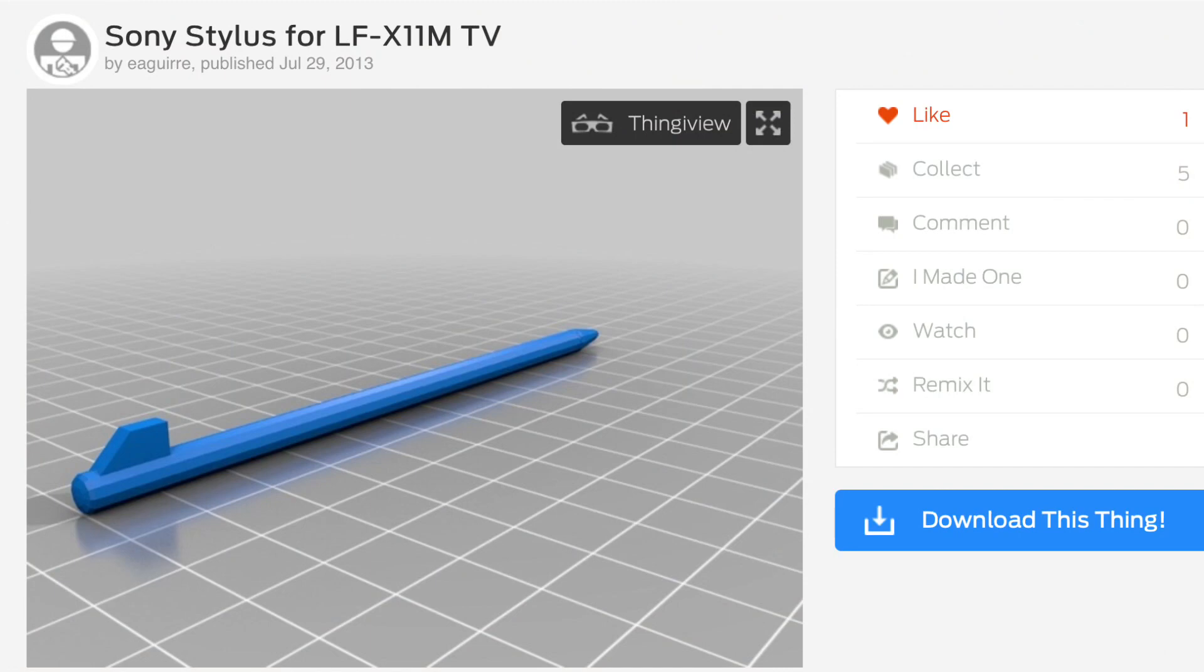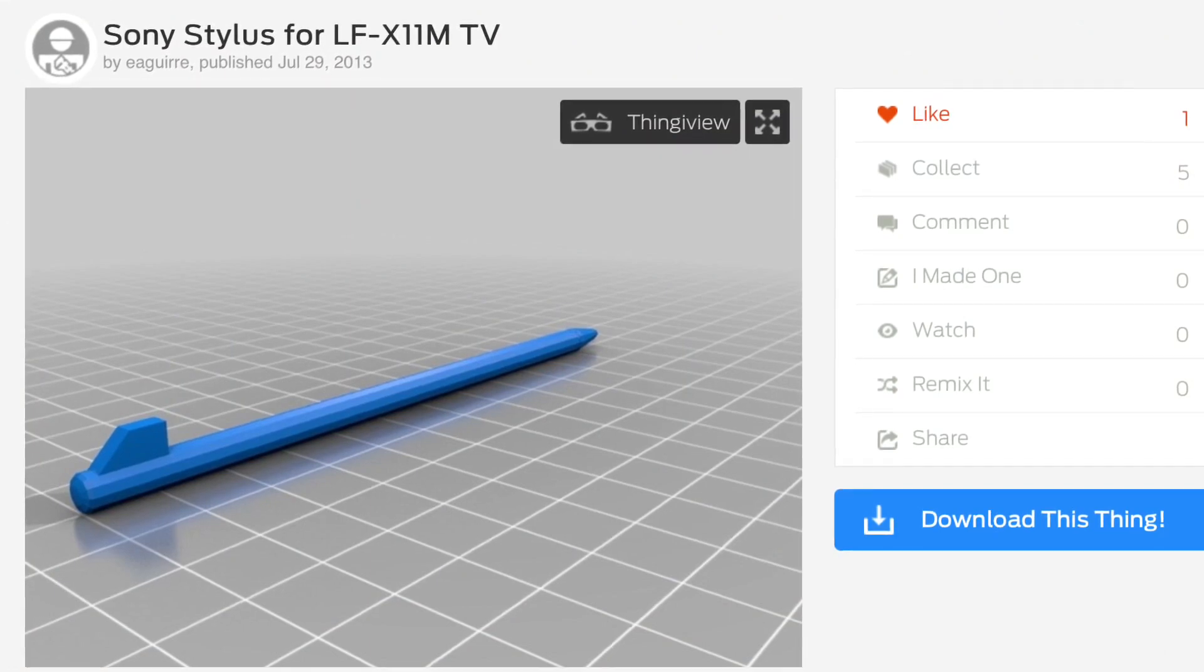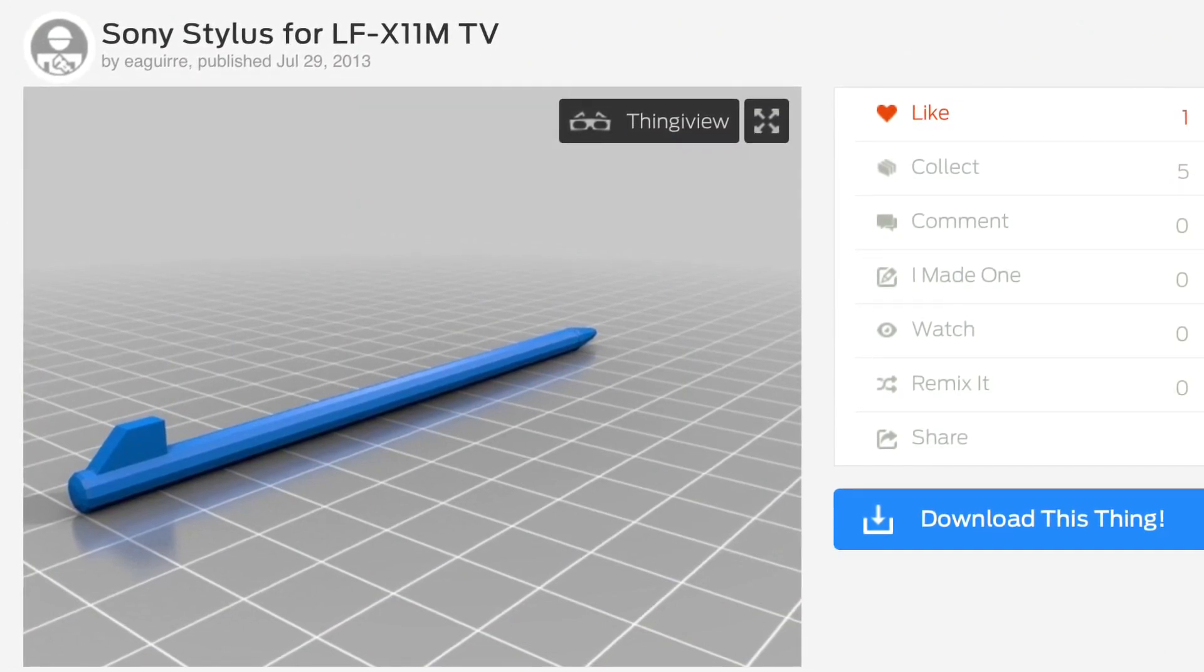So I went to Thingiverse and I found the Sony stylus that I liked by user Eguire. Now the filament recommended 220 degrees C, but I chose 215 based on experience. So I set that up in my slicer filament settings.